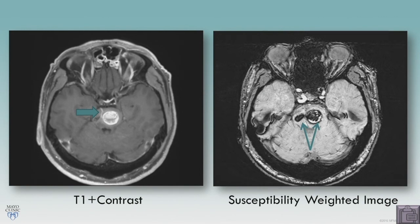We think that the developmental venous anomaly leads to the cavernous malformation forming sometime during life. The thoughts are that there is venous hypertension, backup of flow, some hypoxia in the local tissue that leads to angiogenesis and formation of this abnormal vascular malformation. Some have also hypothesized that the developmental venous anomaly may undergo thrombosis, and then there's backflow of blood into the cavernous malformation, which may explain why these hemorrhage.